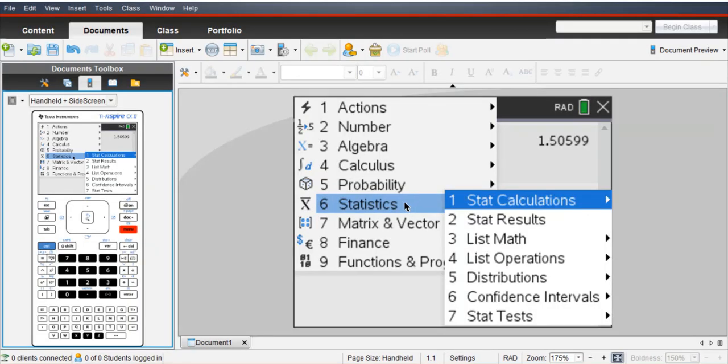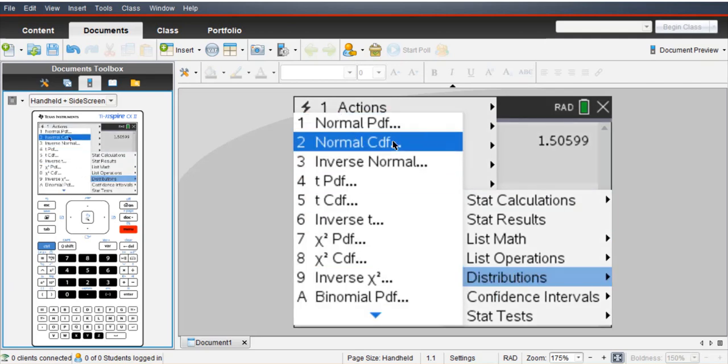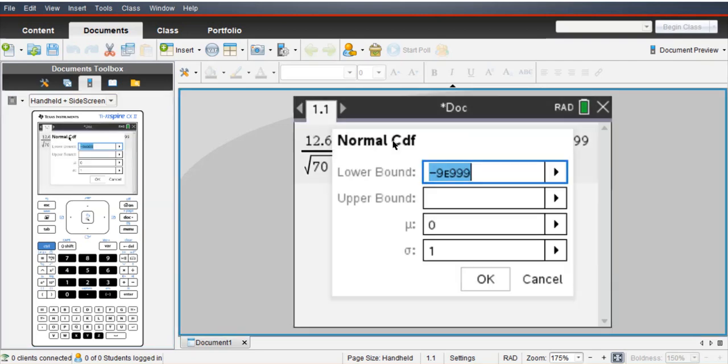Okay, so in your TI, go menu, stats, distributions, confidence distribution. Okay, so the lower bound is 24. Upper bound is 30.